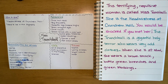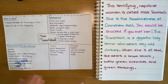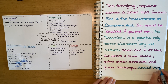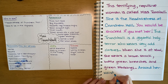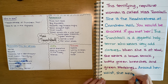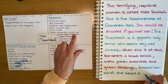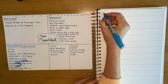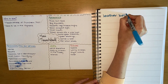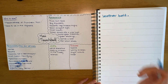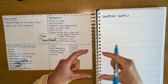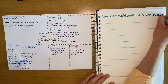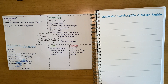Miss Trunchbull also wears something around her waist — it's a wide belt. I wanted to add that in a separate sentence: 'Around her waist, she wears a brown leather belt.' Actually I'm going to be a bit more descriptive — the belt also has a silver buckle. Pause the video now and write a sentence about what Miss Trunchbull wears around her waist.